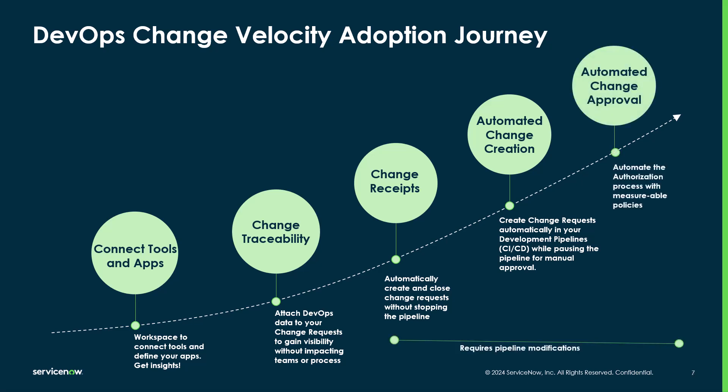The final step in this process is to move to full change automation. This is where we leverage the data not only for visibility and consistency, but also for connecting the policies that have been defined within ServiceNow. This allows for the authorization of the change to happen automatically. Policies are a standard part of ServiceNow's change management application. They take inputs such as code coverage, test results, or security scans to determine if a change should be automatically accepted, rejected, or flagged for manual review. The level at which you automate is completely up to you and the policies you've created within your organization.